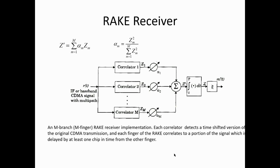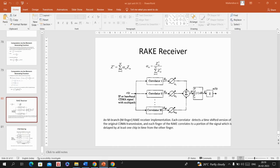The RAKE receiver is used in CDMA systems. In a CDMA system, multiple signal components delayed by more than one chip duration appear as uncorrelated noise at the receiving end. To counteract these uncorrelated signals, CDMA systems use the RAKE receiver. The RAKE receiver combines the delayed versions of the signal to increase the SNR of the received signal.